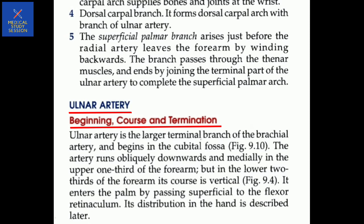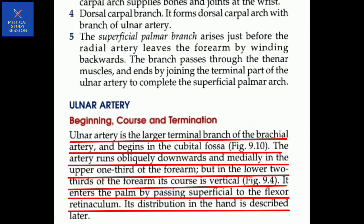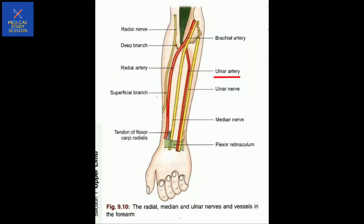The superficial palmar arch is formed by the ulnar artery. Now, ulnar artery - beginning, course and termination. The ulnar artery is the larger terminal branch of the brachial artery, beginning in the cubital fossa (figure 9.10). The artery runs obliquely downward and medially in the upper one-third of the forearm, but in the lower two-thirds it runs vertically. It enters the palm by passing superficial to the flexor retinaculum. Its distribution in the hand is described later.